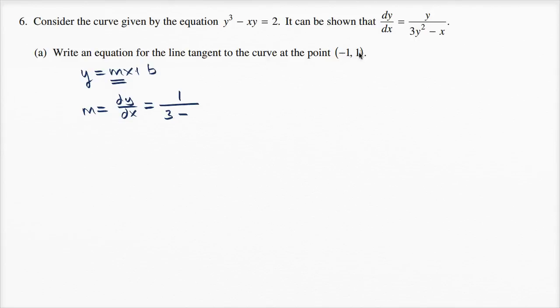So x = -1 here, giving us 1/(3 - (-1)) = 1/(3 + 1) = 1/4.